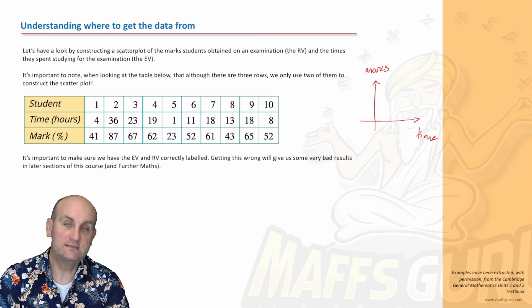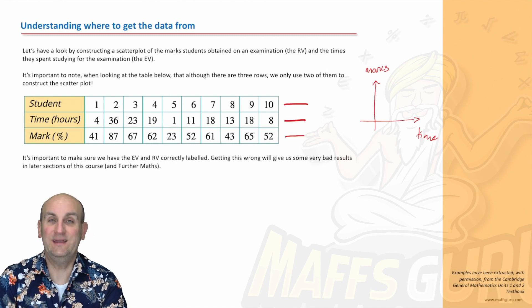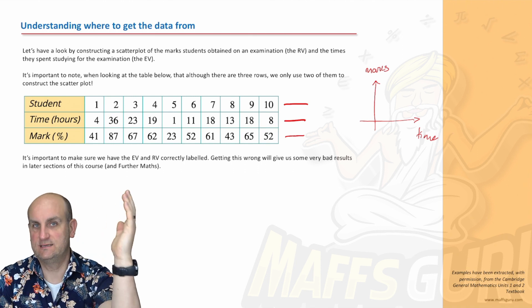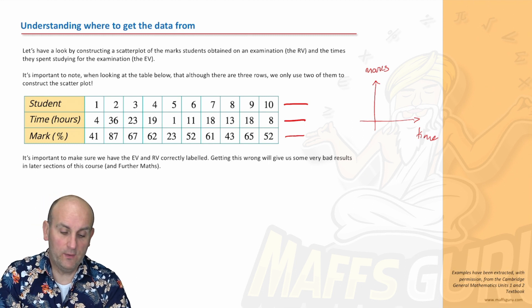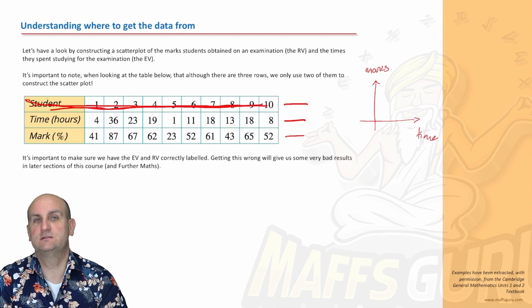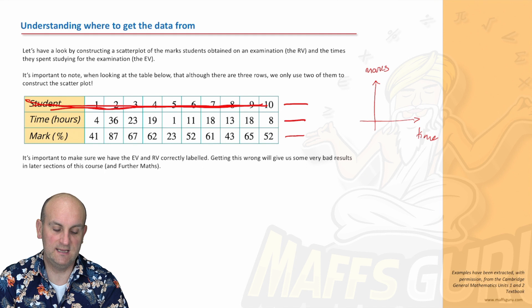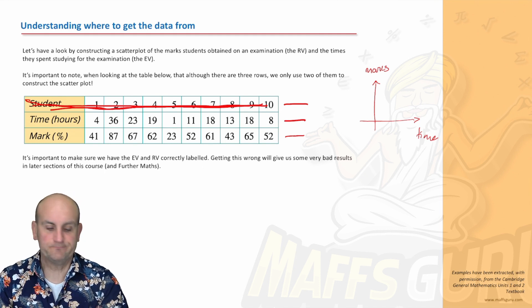So obviously we've got here the examination scores and the times they spent studying. We've got RV and EV in brackets because we've already identified which one we're predicting from which. Time spent and marks - it makes sense that time is our explanatory variable and we are trying to guess the mark from the time they spent studying. So we have three rows: student, time, and mark. Now, interestingly, scatterplots only plot two sets of data. You'll plot one set against another. Because we've got three rows here, one of those rows is useless to me, and the one that's useless is the student. We're only going to plot the time versus the mark.